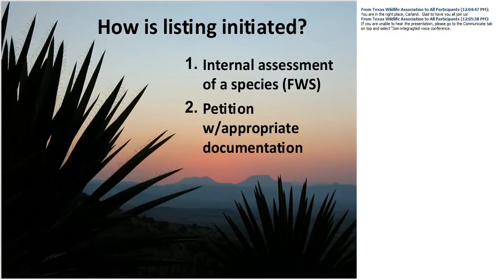How listing is initiated: there are two different ways. Either Fish and Wildlife Service conducts an internal assessment of a species prompting a listing, or other agencies, organizations, citizens, etc., can file a petition for one species — or, as has more recently occurred, petitions are filed for multiple species at once.